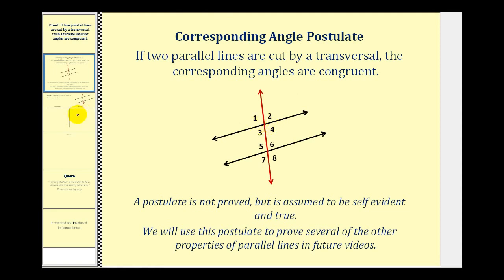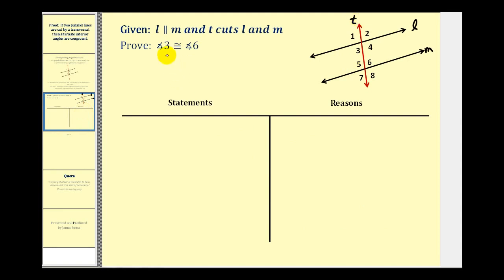Let's take a look at a two-column proof. Here we're given that line L and M are parallel and line T cuts L and M. We want to prove angle 3 is congruent to angle 6. Notice angle 3 and angle 6 are alternate interior angles.